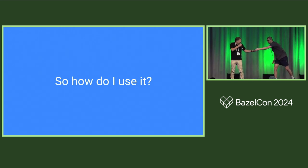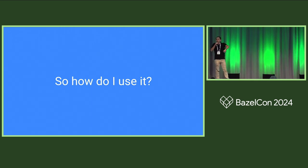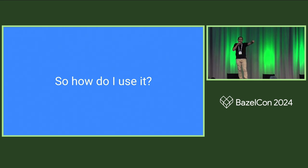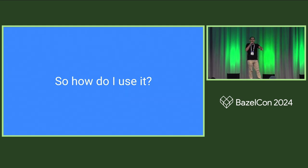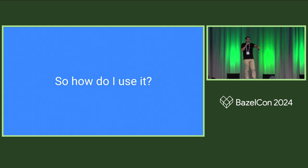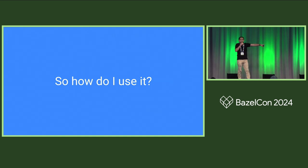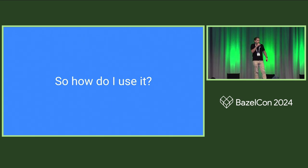Thank you so much. So how many of you work in a project that has C++? Raise your hand. That's a lot of you. How many of your projects have a custom toolchain configuration? Put your hand down if your project does not. So you all have custom toolchain configurations. Keep your hand up if you have ever modified it. Keep your hand up if you actually understand your full toolchain configuration. A lot of hands just went down. So we're going to go through an example of how you might try to build a toolchain using the new stuff here.